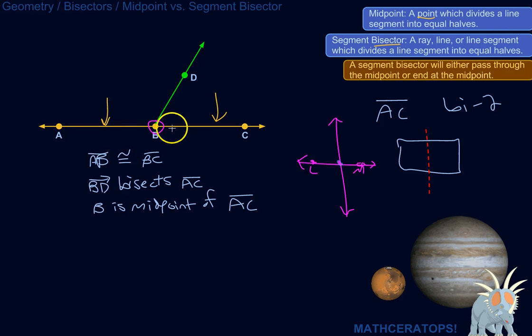If AB is congruent with BC, that means B is the midpoint. And if B is the midpoint, that means that the ray BD is the bisector of AC, or is a bisector. And if BD is the bisector of AC, then B is the midpoint. And if B is the midpoint, then AB and BC are congruent. So, these are kind of restating the same thing in different ways. Or you can derive each one of these statements from any of the others.